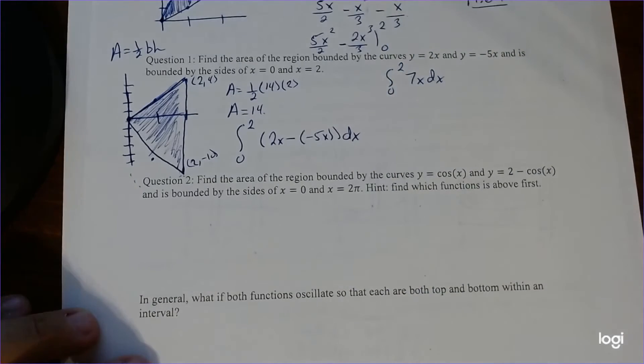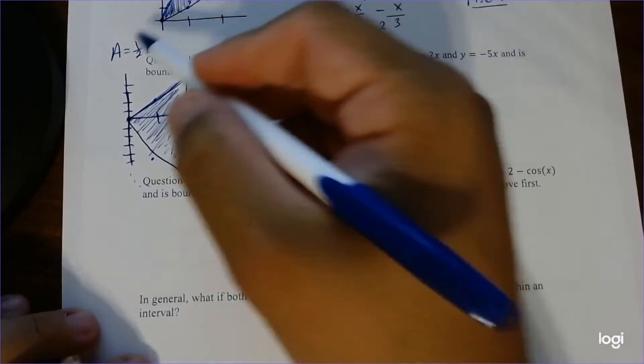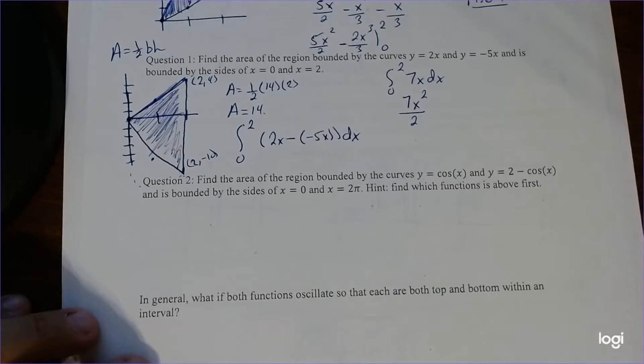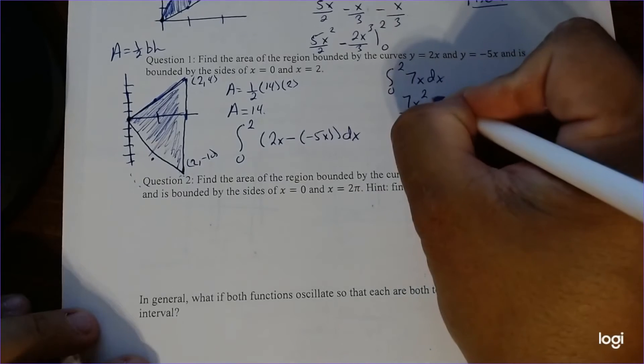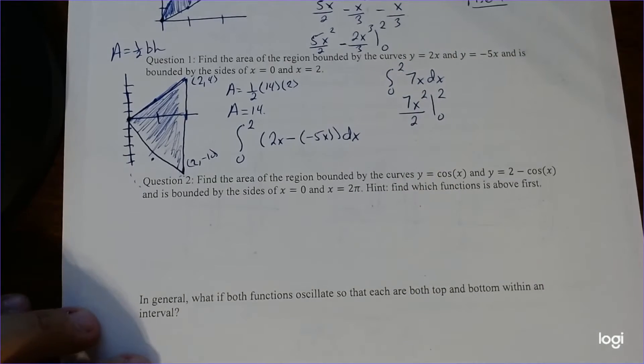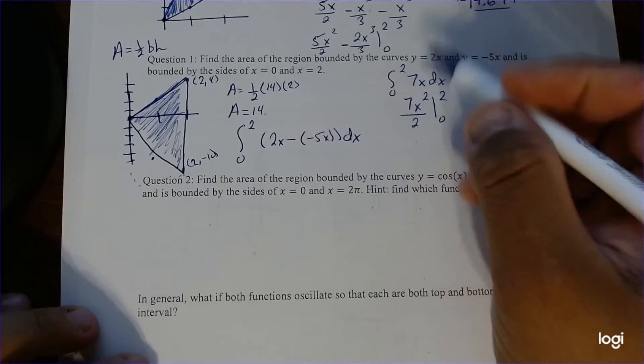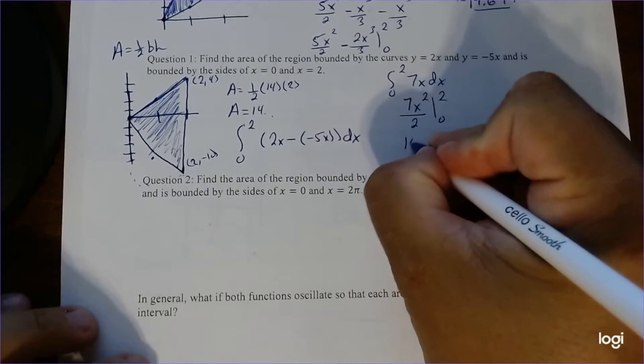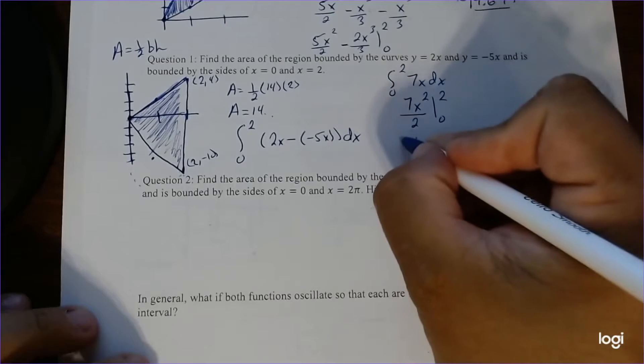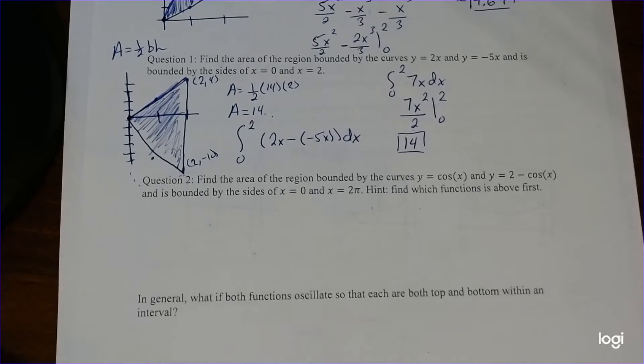And now we just take the integral. So that's going to be 7x squared over 2. And notice that's the 1 half where it comes from the area of a triangle. Evaluate it at 0 and 2. Plug it in. 2 squared is 4. 4 times 7 is 28. Divided by 2 gives you 14. And then plug in 0 gives you 0. So our area is 14, which is the same if we just do it in the same way.